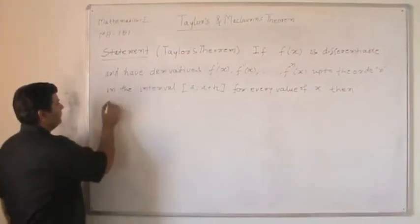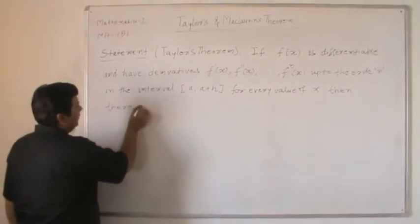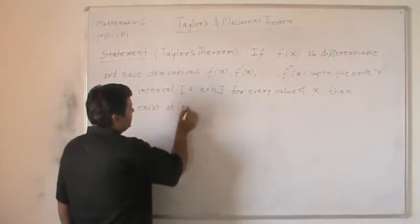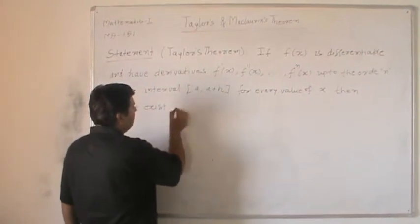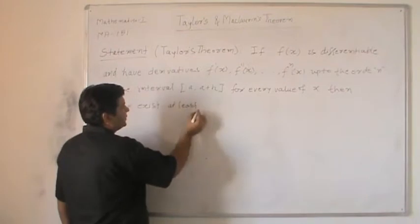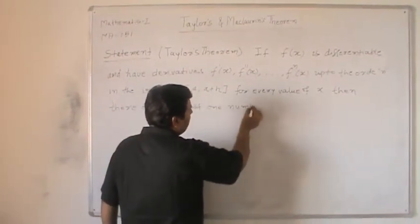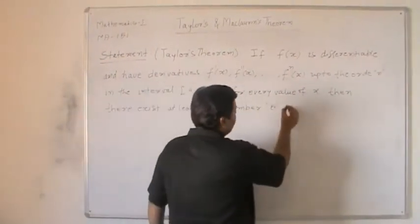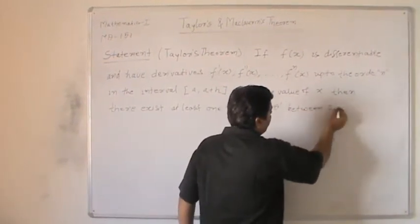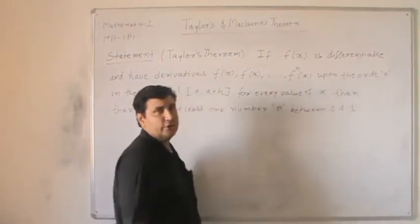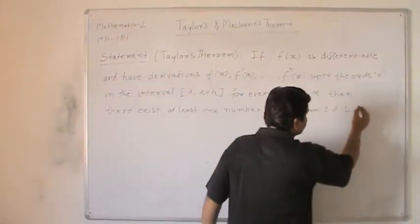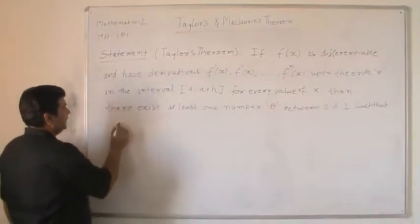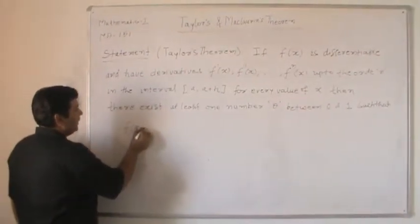in the interval [a, a+h] for every value of x, then there exists at least one number theta between 0 and 1 such that we can write f(a+h)